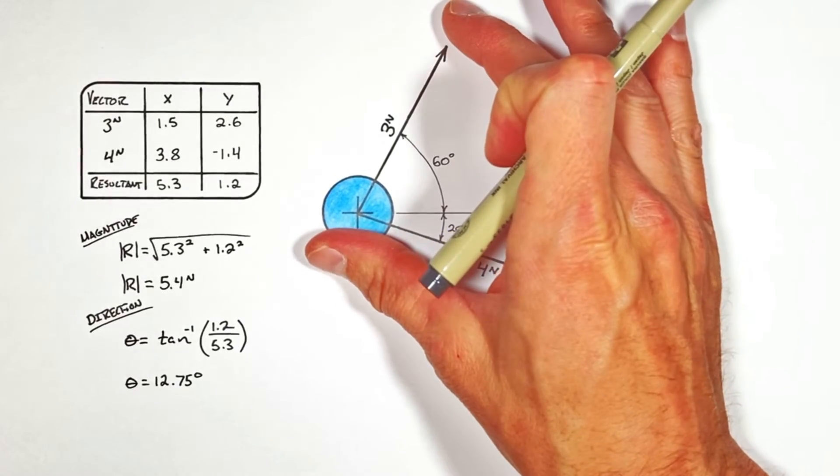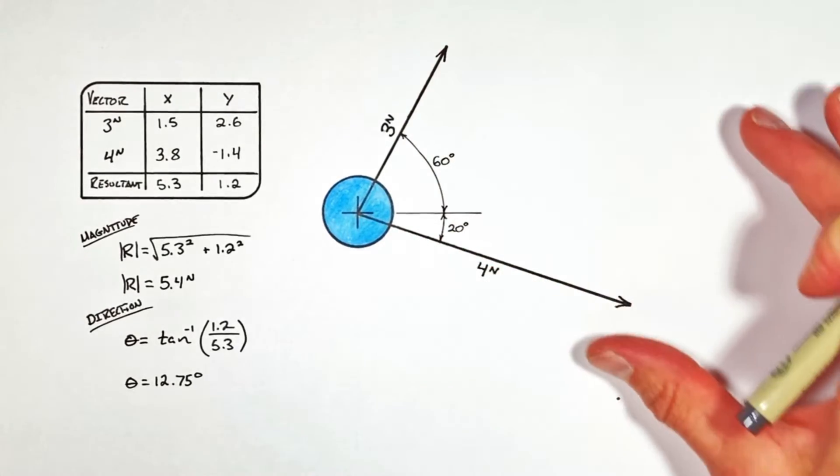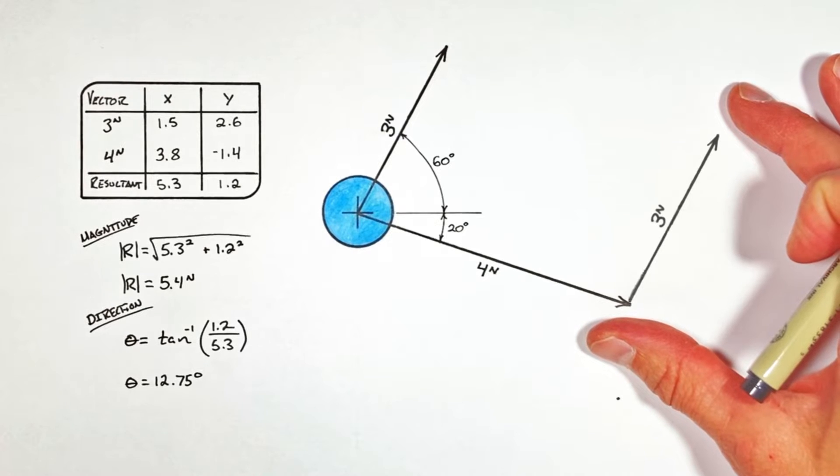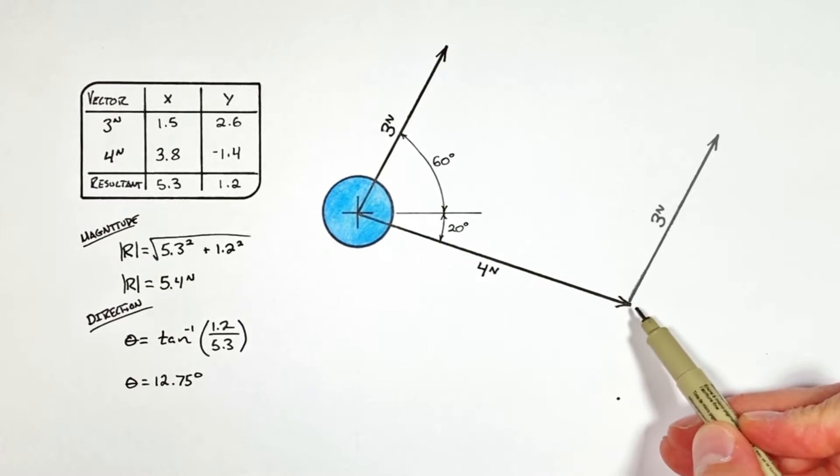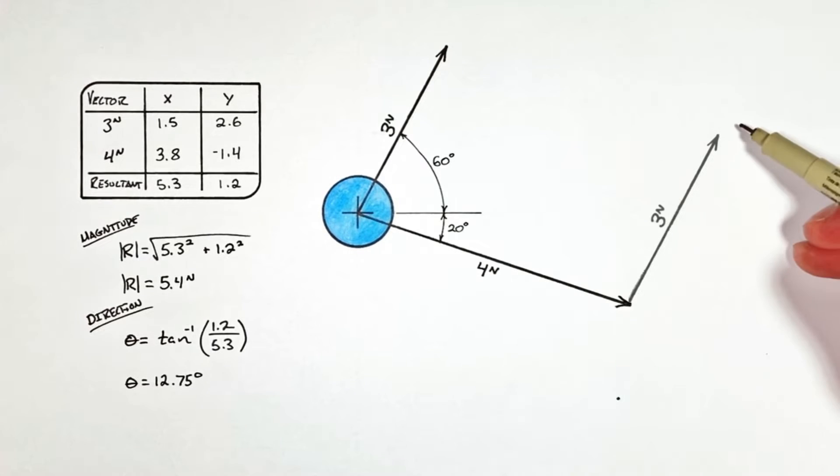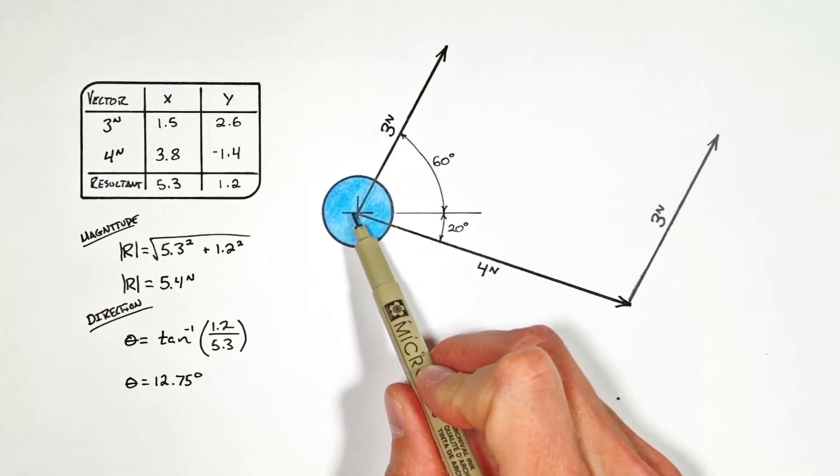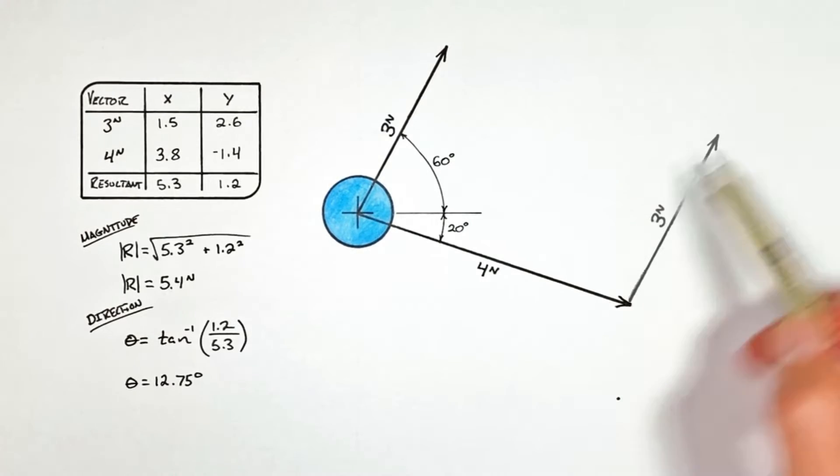So imagine we could take this vector right here and cut it and then paste it right over here so that the tip of one vector was touching the tail of the next vector. In that case the distance from the beginning of our vector train to the very end of our vector train would be the resultant vector.